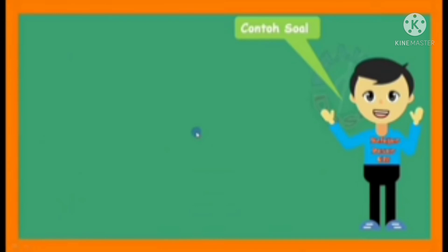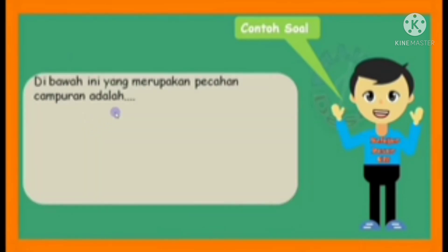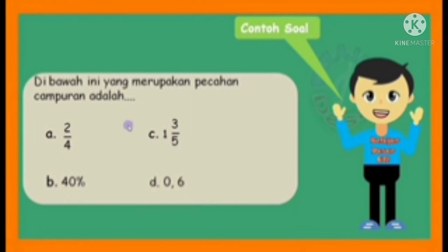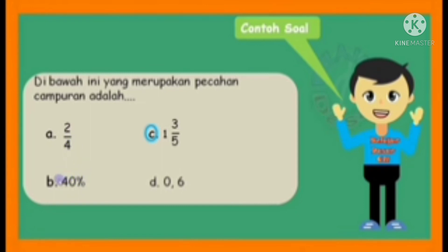Kalau sudah jelas, kita masuk ke soal. Contoh soalnya: dari pilihan di bawah ini, yang merupakan pecahan campuran adalah: A. 2/4, B. 40%, C. 1 3/5, D. 0,6. Ingat, kita mencari pecahan campuran yang terdiri dari 2 bilangan yaitu bilangan bulat dan bilangan pecahan. Mana yang terdiri dari 2 bilangan? Yaitu yang C: 1 itu bilangan bulat dan 3/5 itu sebagai pecahannya. Kalau 2/4 hanya terdiri dari pembilang dan penyebut. Kalau 40% sudah ada tandanya, berarti bentuk persen. Kemudian 0,6 ada komanya, berarti pecahan desimal. Berarti jawabannya yang C.